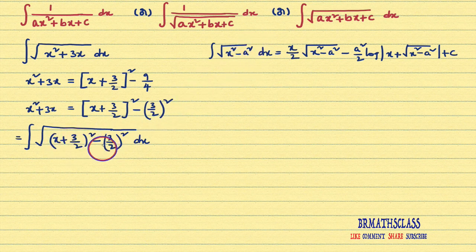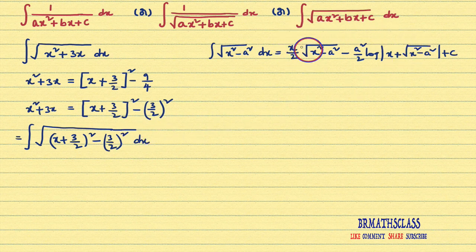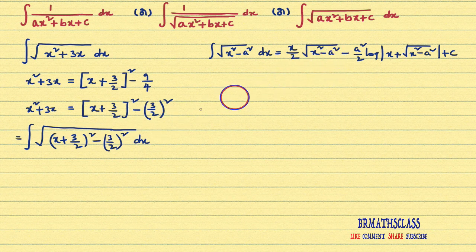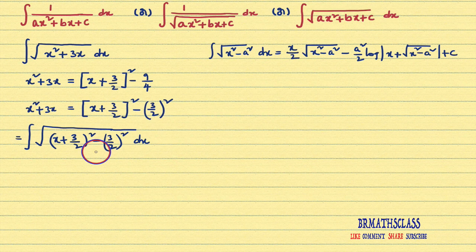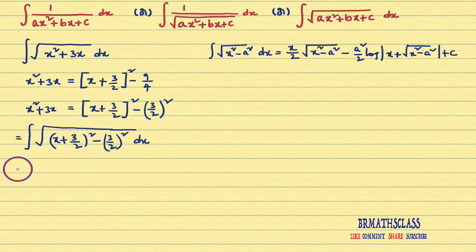In place of a², (3/2)² is there. What we will do: in this formula, wherever x is there, we will write x + 3/2. Wherever a is there, we will write 3/2. Just apply this formula — in place of x, write x + 3/2; in place of a, write 3/2. Start applying the formula.